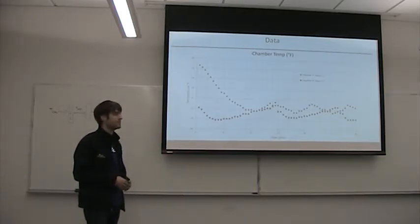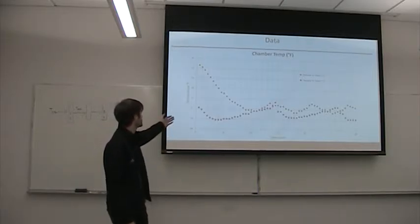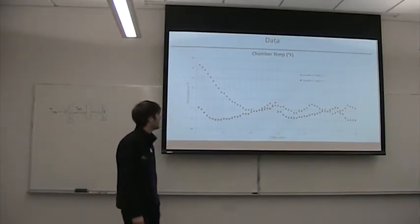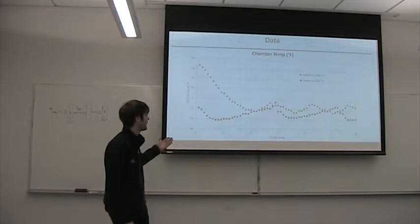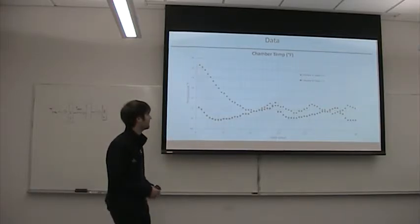And then so chamber A had 1618 BTUs per hour, and then chamber B was 552 BTUs per hour.